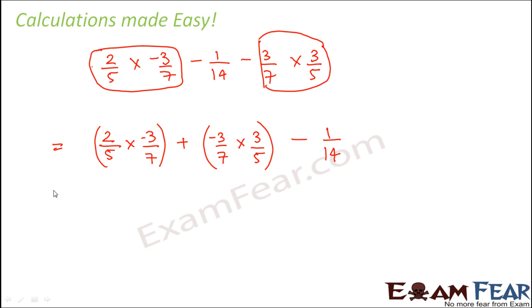Now if you look at this term and this term, do you have anything in common? Yes, of course, minus 3 by 7 is in common. So what we can do is remember the distributive property where we said that ab minus ac is equal to a into b minus c or a into b plus c, whatever you call it, whether it is subtraction or addition. But this rule holds true.